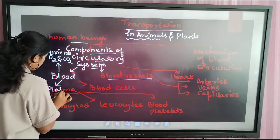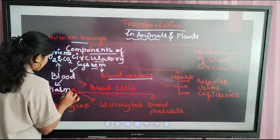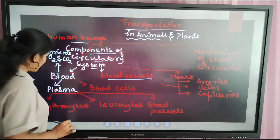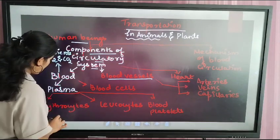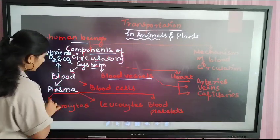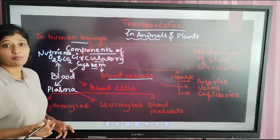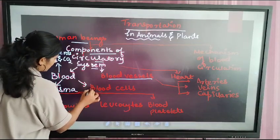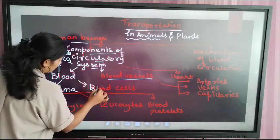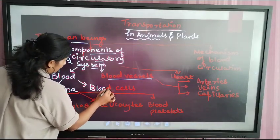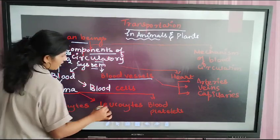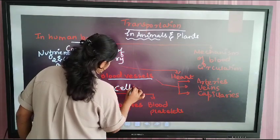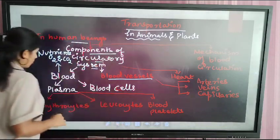Blood is made up of plasma. Along with plasma, it is also made up of blood cells. So blood is made up of plasma and blood cells.